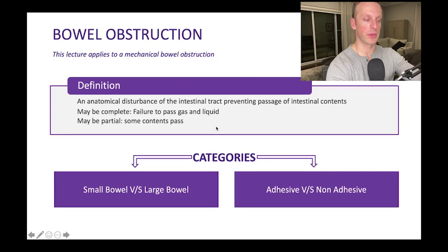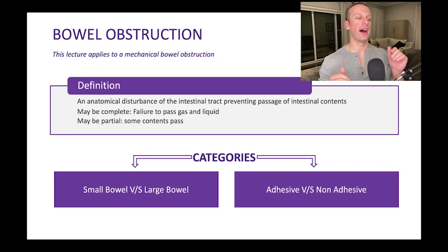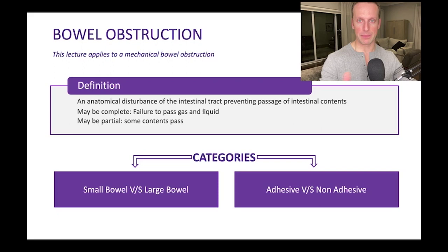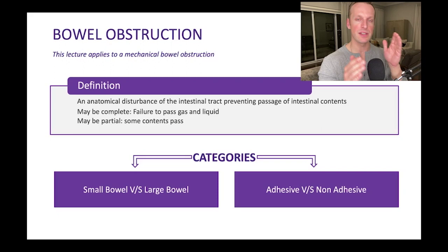Mechanical obstructions can be either complete or partial. In a complete bowel obstruction, there's failure to pass both stool and gas. In a partial obstruction, some liquid or gas may get through. The core categories I want to focus on are: large versus small, and adhesive versus non-adhesive. Typically all large bowel obstructions are non-adhesive, but small bowel obstructions may be adhesive or non-adhesive, and the approach differs.